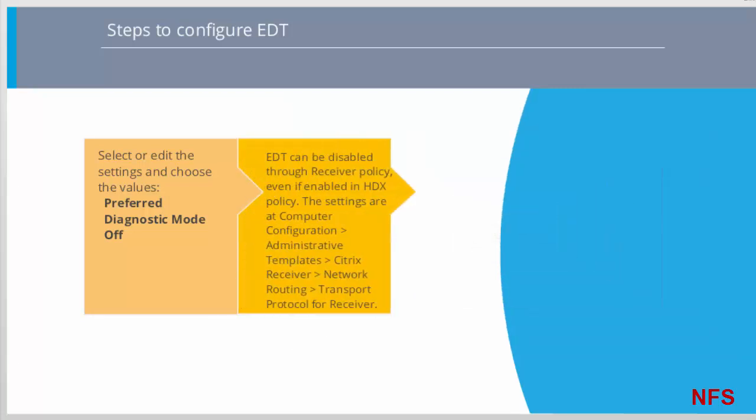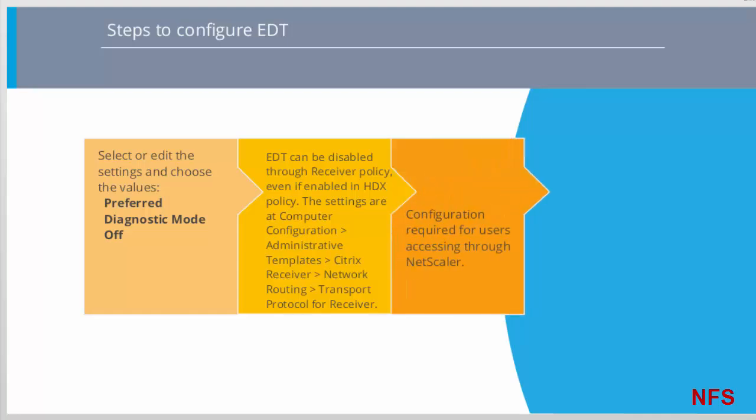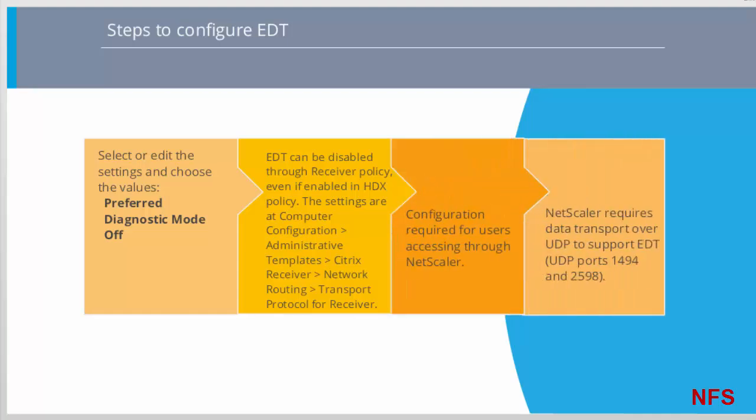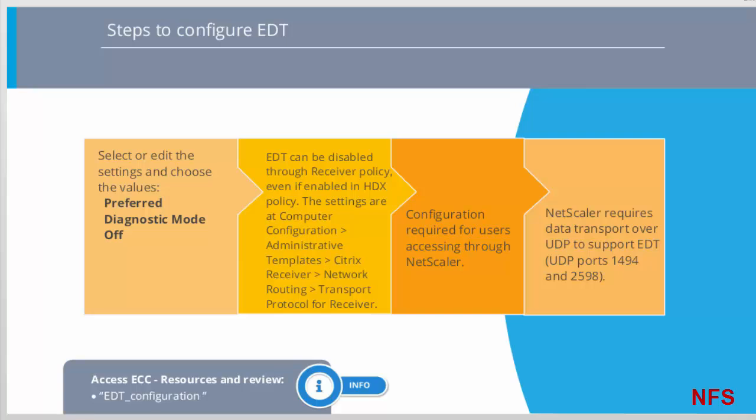Even if the HDX policy is set to Preferred or Diagnostic mode, it is still possible to disable EDT for a particular client, for security reasons for example. To do this, add the Receiver.ADML template and change the setting in the GPO at Computer Configuration > Administrative Templates > Citrix Receiver > Network Routing > Transport Protocol for Receiver. Recall that the NetScaler needs to be configured to support data transport over UDP, and that EDT runs over UDP ports 1494 and 2598. Please refer to the EDT configuration document in the Additional Resources pane, which includes the NetScaler UDP support configuration as well as additional manual configuration instructions.